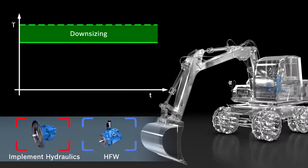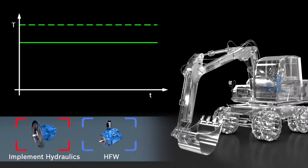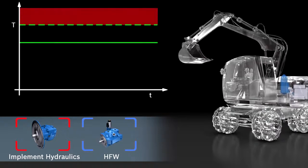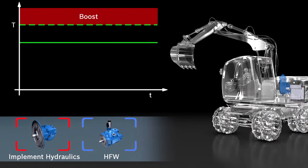Should power smoothing and thus a downsizing be of secondary importance, HFW can be used alternatively. It can be used for engine rated power. This boost function means more overall power while using the same combustion engine.